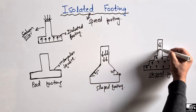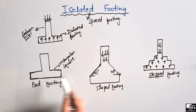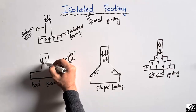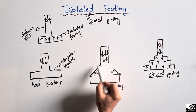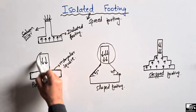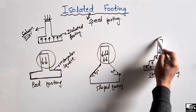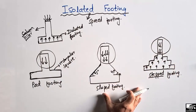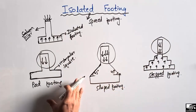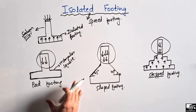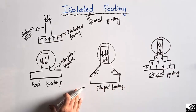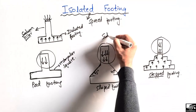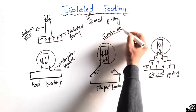The purpose of the stepped footing is the same as the others — it takes the load of a single column, just like the pad footing and the slope footing. In all these cases, the footing always takes the load of a single column or pillar. Such type of footing is called the isolated footing, and it has three main types depending on the shape. Hope you guys understand, and don't forget to subscribe to our channel for daily civil engineering videos. Thank you for watching.